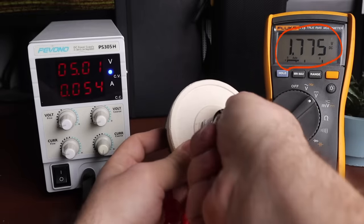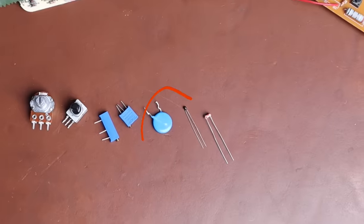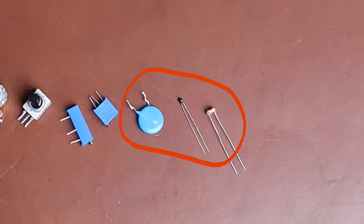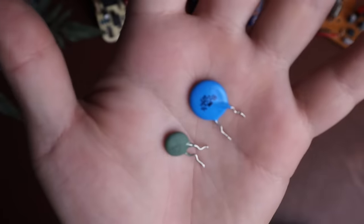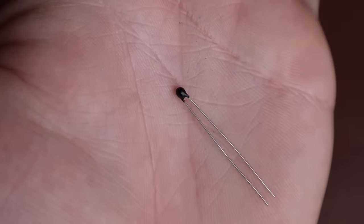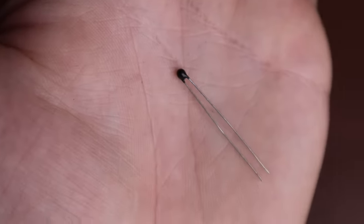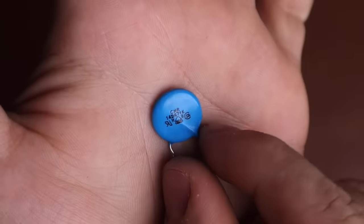The next type of resistors we have are environment-based resistors. Now these resistors aren't manually adjusted, but instead they react to certain conditions in the environment to change their resistance. The most common of these resistors are thermistors, LDR resistors, and varistors.